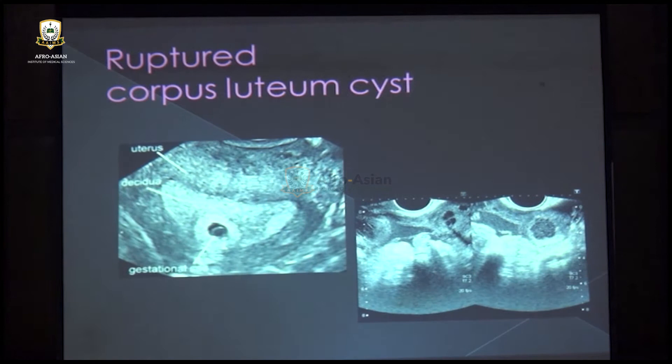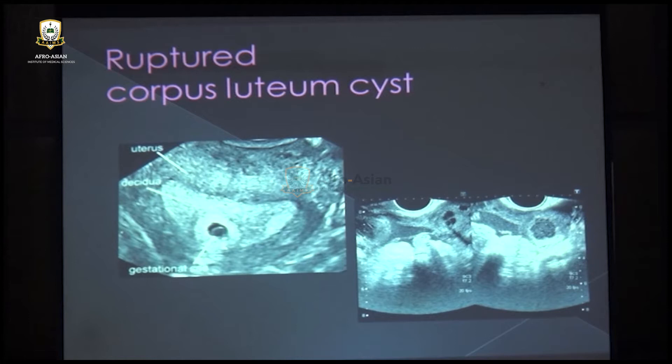Never forget to look for ruptured corpus luteum cysts. Sometimes there is pelvic pain, no intrauterine pregnancy visible, and no adnexal pregnancy — that may be a ruptured corpus luteum cyst. There can be a normal intrauterine pregnancy with free fluid in the cul-de-sac and a ruptured cyst in the adnexal region. So whenever a patient has pelvic pain and free fluid, think of ectopic pregnancy but never forget ruptured corpus luteum cysts.